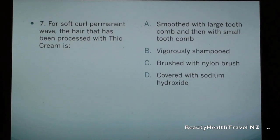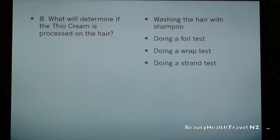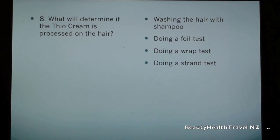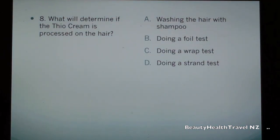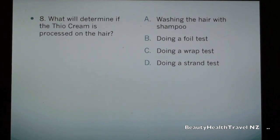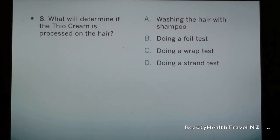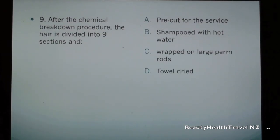Question 7 option d) covered with sodium hydroxide. Question 8: What will determine if the thio cream is processed on the hair? a) washing the hair with shampoo, b) doing a foil test, c) doing a wrap test, d) doing a strand test.